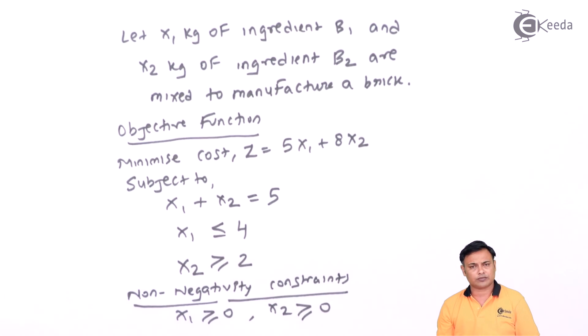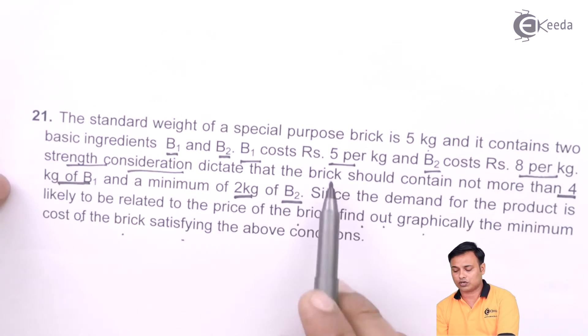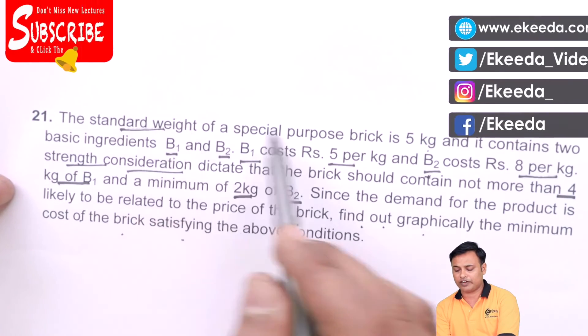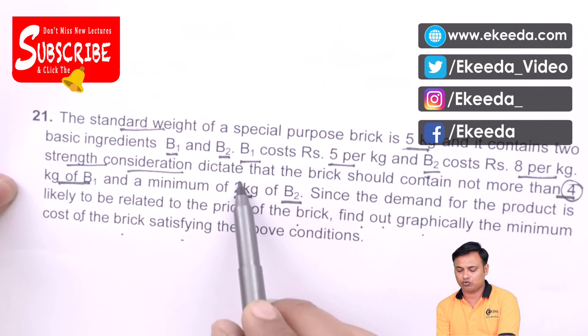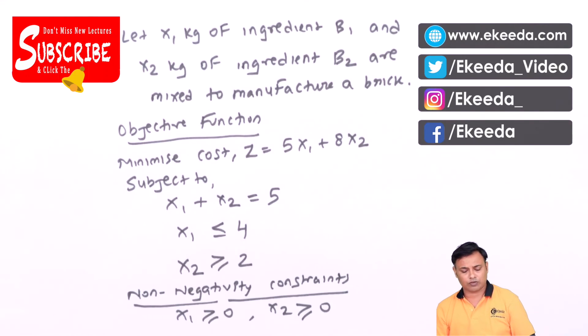We hope you have not missed out any point in the problem. This was the original question. We have used the cost, we have used the standard weight 5 kg, then we have used this 4 and 2. With this the problem is done.